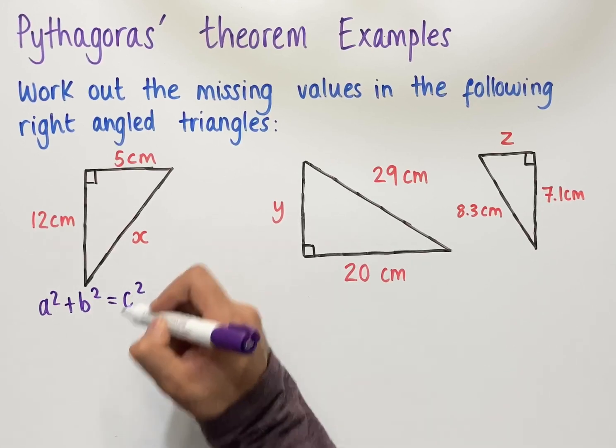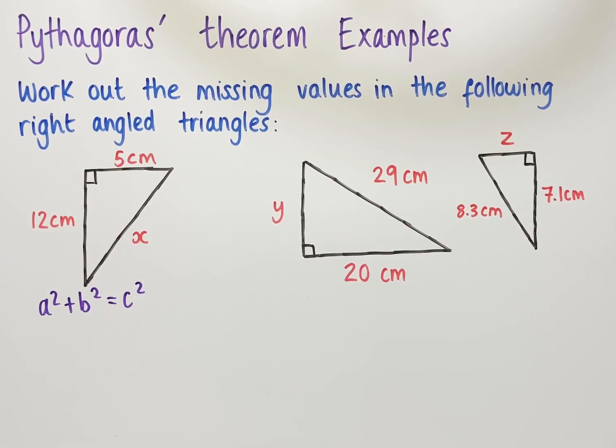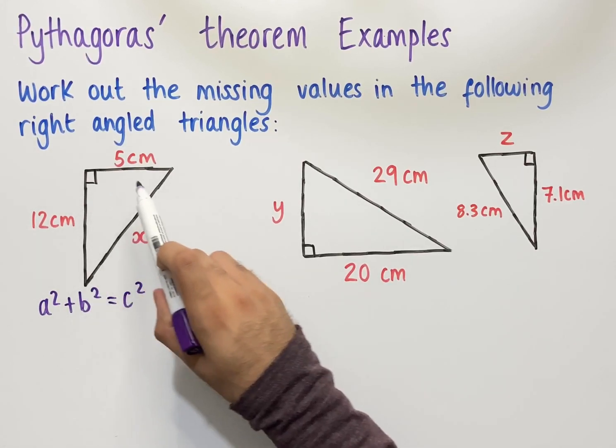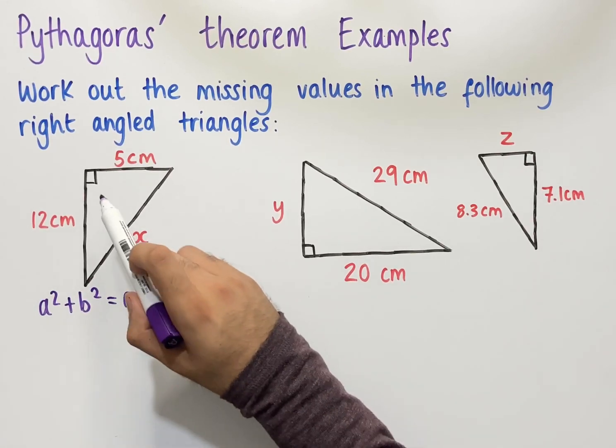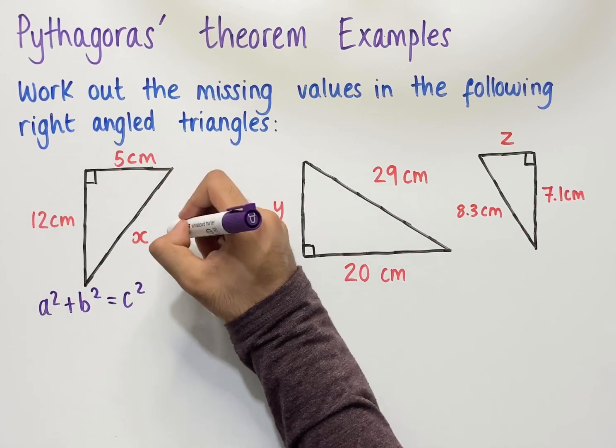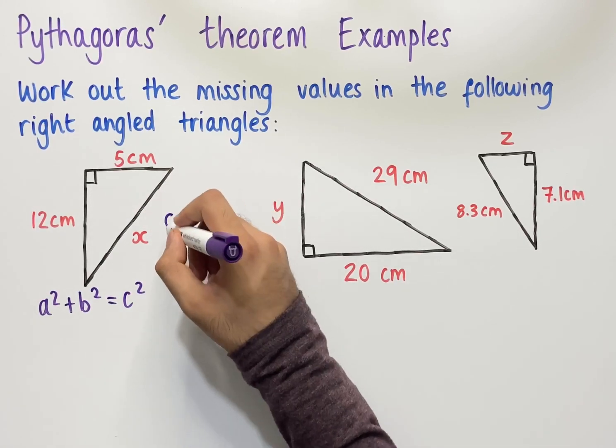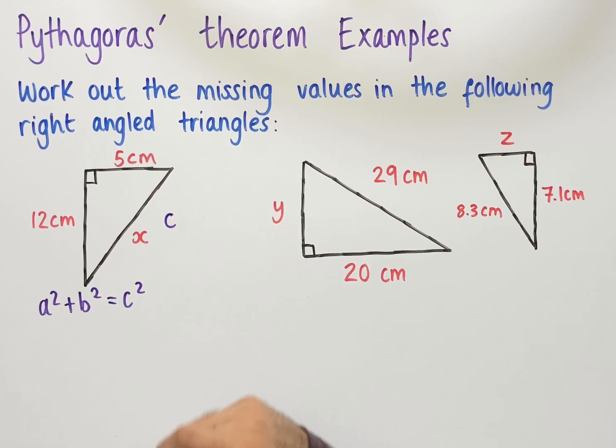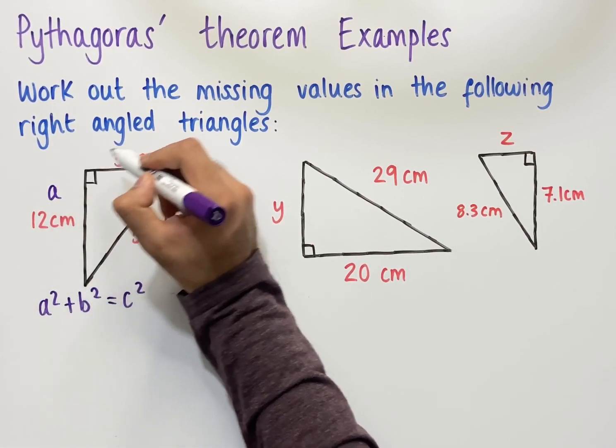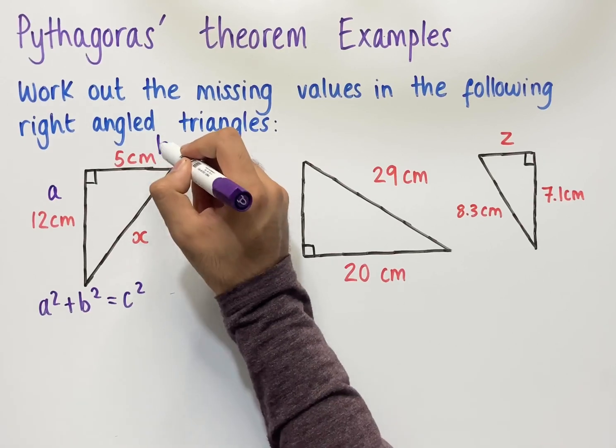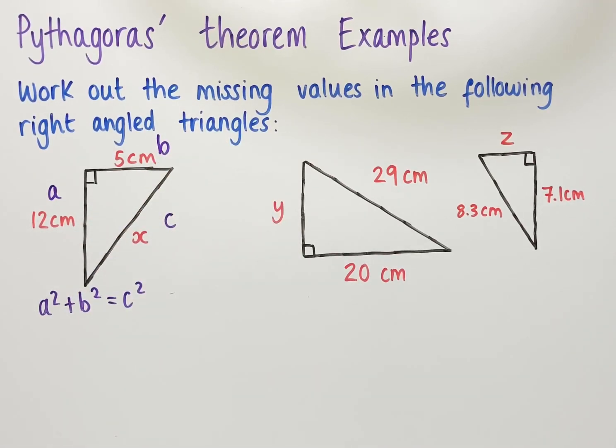where c is the hypotenuse of a right-angled triangle. So if we first start by labelling this triangle with a, b, and c, we have that the hypotenuse is the side that's opposite the right angle, so that's this side here, we can label it as c. And the other two sides can be labelled in any way we like. So we could start by labelling this as a, and this as b.